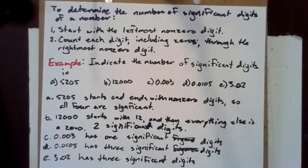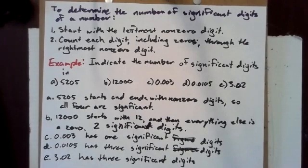0.0105 has three significant digits: 1, 0, 5. And 3.02 has three significant digits because the number begins and ends with a non-zero digit.